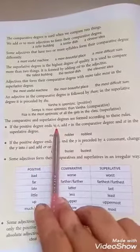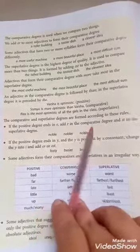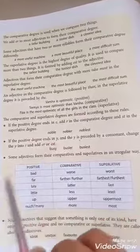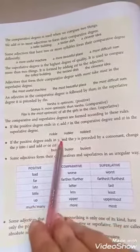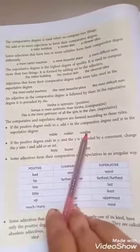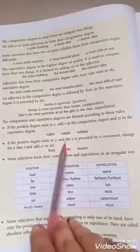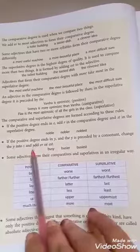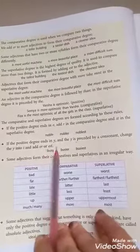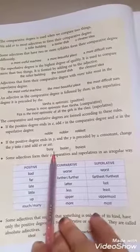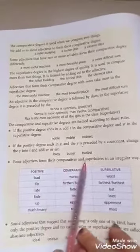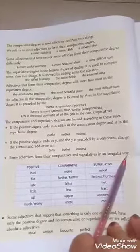The comparative and superlative degrees are formed according to these rules. If the positive degree ends in -e, add -r for comparative and -st for superlative — for example: noble, nobler, noblest. If the positive degree ends in -y preceded by a consonant, change -y to -i and add -er or -est — for example: busy, busier, busiest.